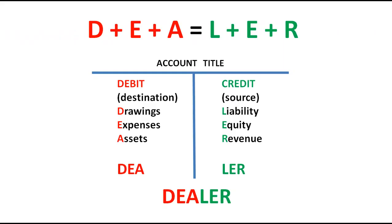This is just a review of the rules on debits and credits. May video tayo about this — yung the account, debits and credits, and the double entry system. You can check the list of the videos for more details. But let us have a review bago tayo mag-analyze ng transactions. Ang hikita nyo dito, we have D plus E plus A is equal to L plus E plus R — where D stands for drawings, E is expenses, A is assets, L is liability, E is equity, and R is revenue.